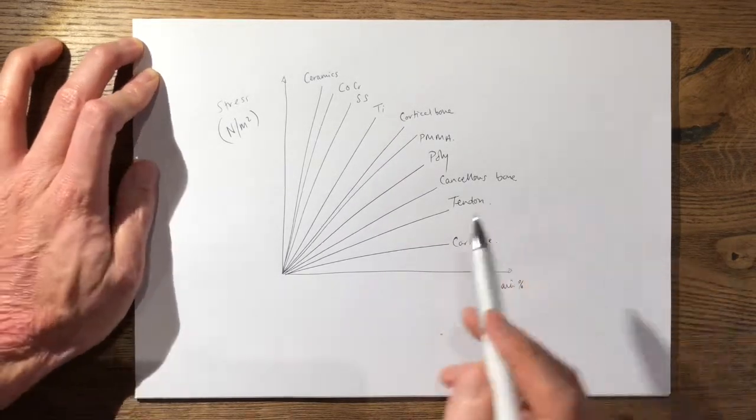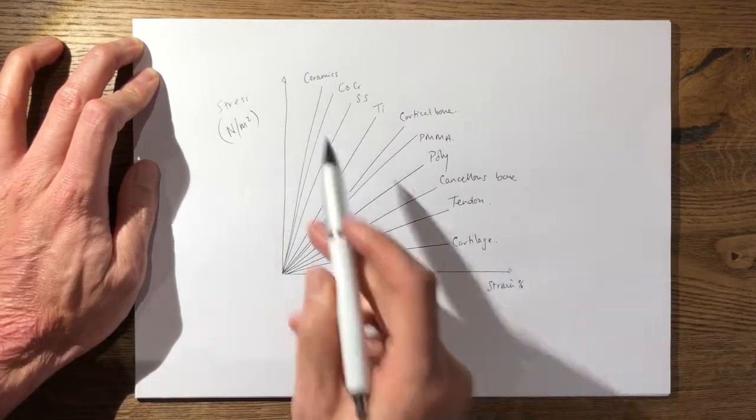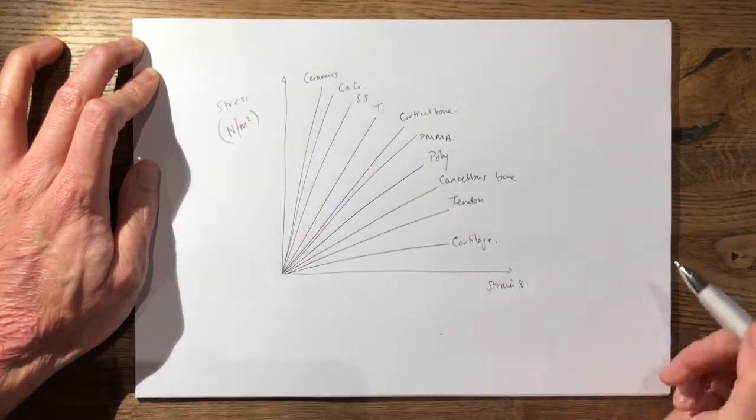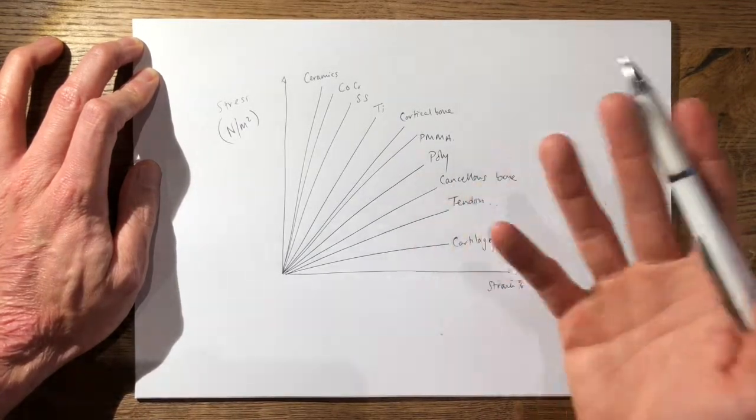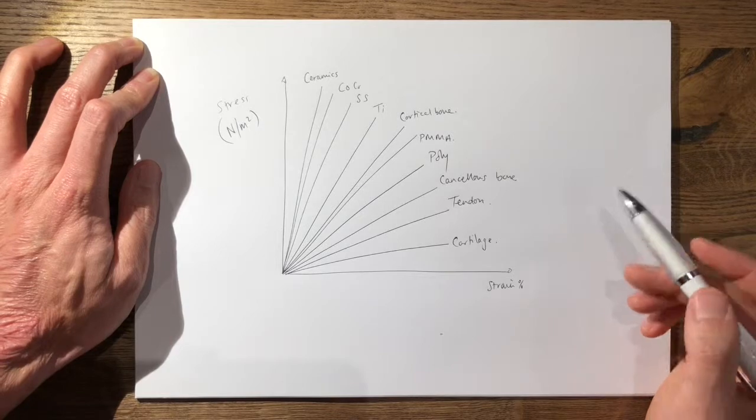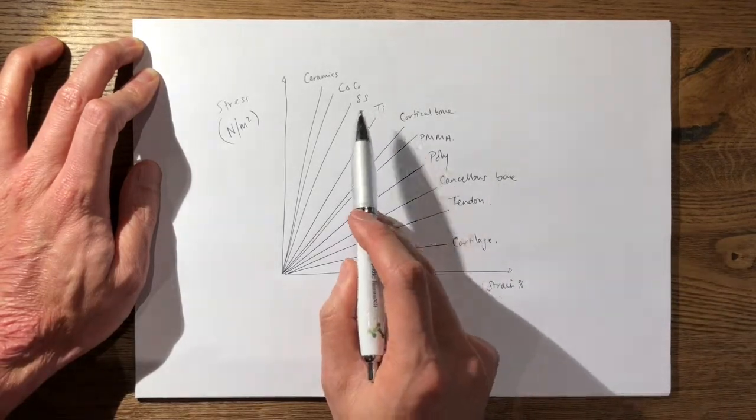Now as I say, you're not expected to know the individual values, you need to know this relationship. The reason this is important clinically is it explains the principles of modulus mismatch.